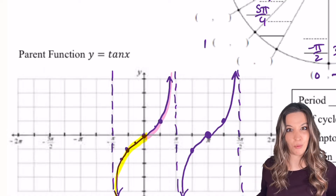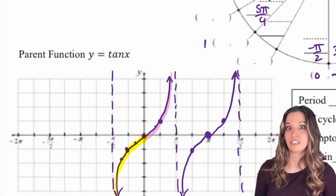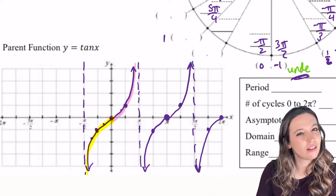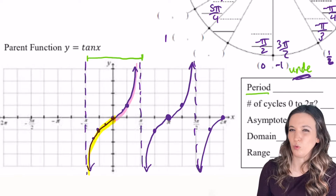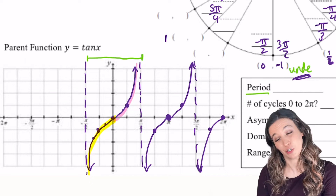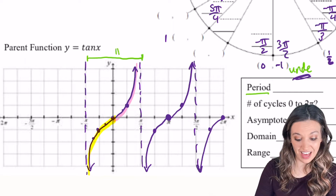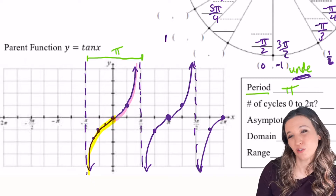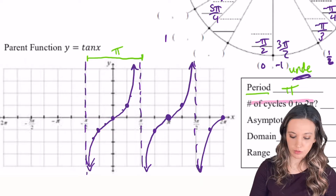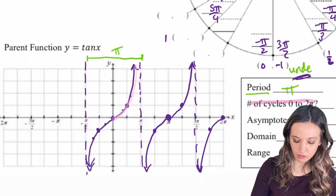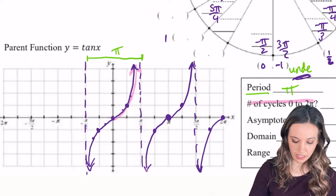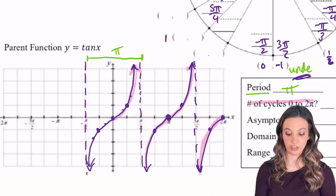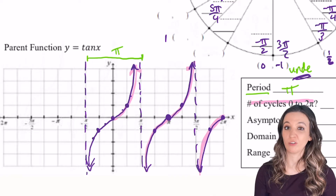We just found some pattern points — we could keep repeating and draw tangent. So what's the period of tangent? What's the horizontal length of one cycle? From negative pi over 2 to pi over 2 is one cycle, so that is pi in length. How many cycles occur between 0 and 2 pi? Here's half a cycle between 0 and pi over 2, then another full cycle and another half cycle all the way to 2 pi — so that's two full cycles.